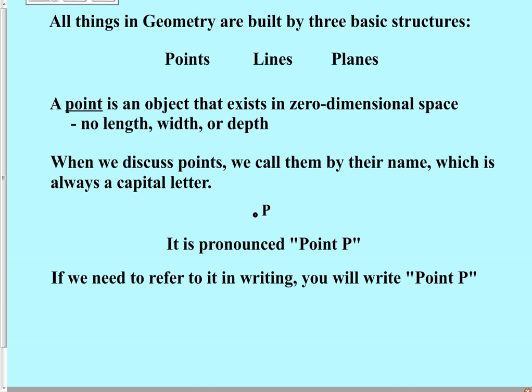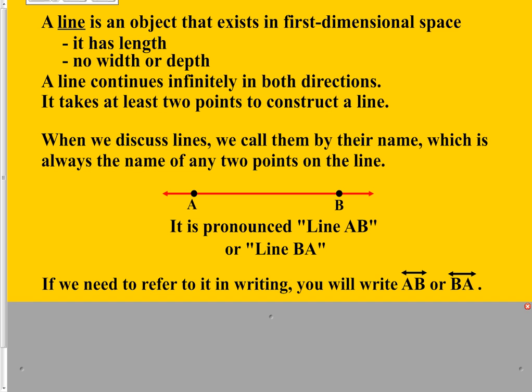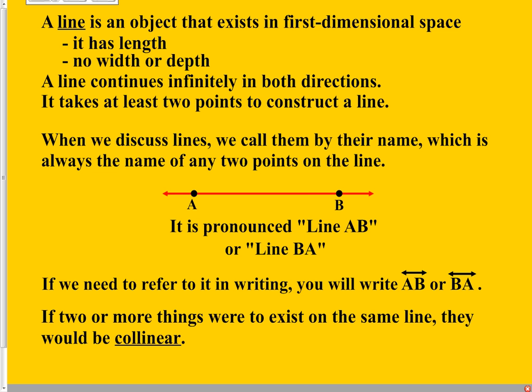We started to see the very first occurrence of how we name things in geometry. When we name something, we name it according to what kind of structure it is. For a point, you identify it as a point and name it with a single capital letter, like point P. Lines are named according to what they are — a line — and you need to name two points off of the line. It's most proper to pick the points furthest out on that line within the diagram, not two points in the middle.